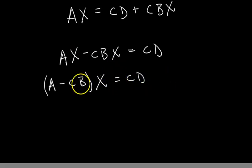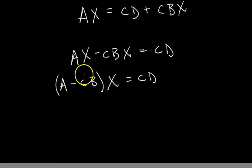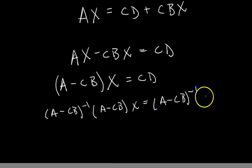And now the last step is we just have to get rid of this matrix A minus CB. And to do that, we can just left multiply both sides by the inverse of A minus CB. So if I do that, I get A minus CB inverse times A minus CB times X equals—we do the same thing to both sides—A minus CB inverse times CD.